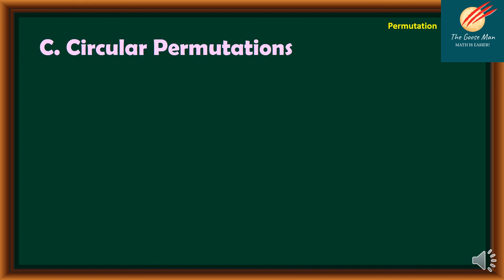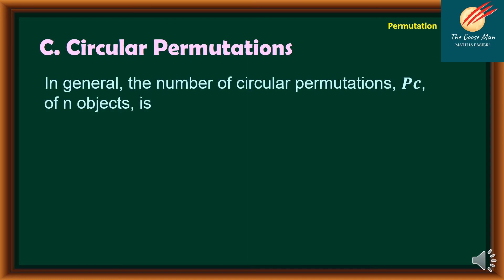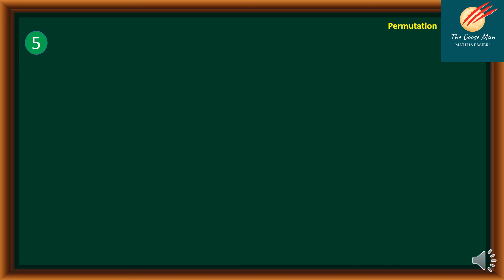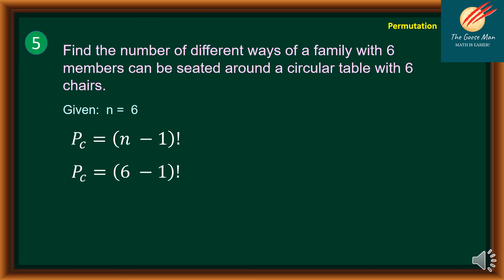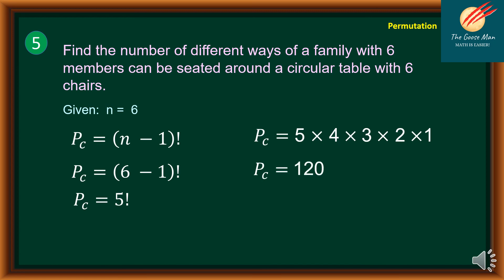Let's move on to the third type of permutation: circular permutation. The number of circular permutations of n objects is (n minus 1) factorial. For problem number 5, find the number of different ways a family of 6 members can be seated around a circular table with 6 chairs. Since n equals 6, we have (6 minus 1) factorial, which is 5 factorial. Expanding, 5 times 4 times 3 times 2 times 1 equals 120. Therefore, there are 120 ways.